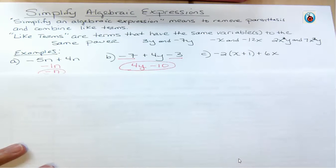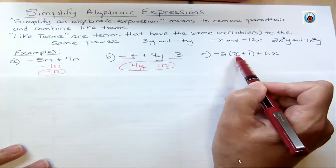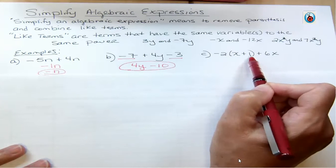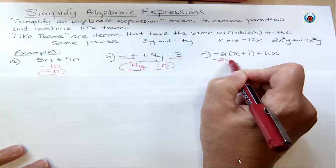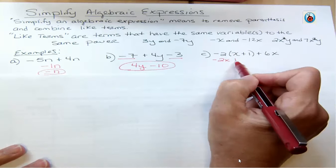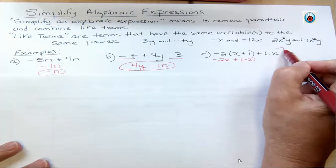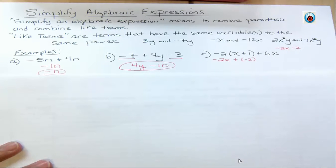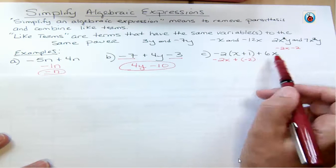In part C we need to remove parentheses, which we didn't have to do in A and B. We use the distributive property: we take the number out front and multiply it by the first term, then multiply it by the second term. So −2 times x is −2x, and −2 times 1 is −2. I can write that as plus negative 2, or more efficiently as minus 2 — those mean the same thing.